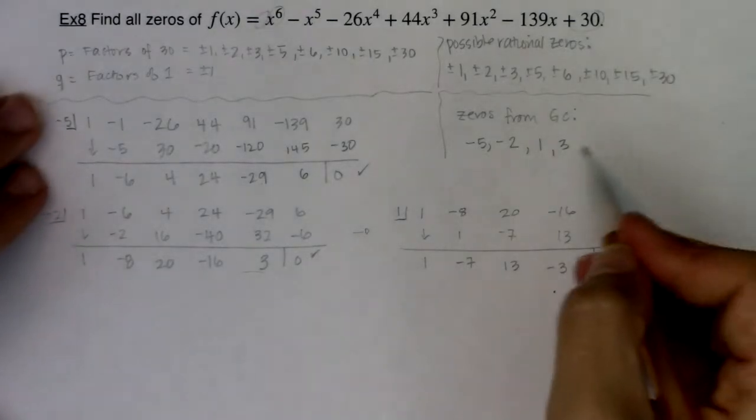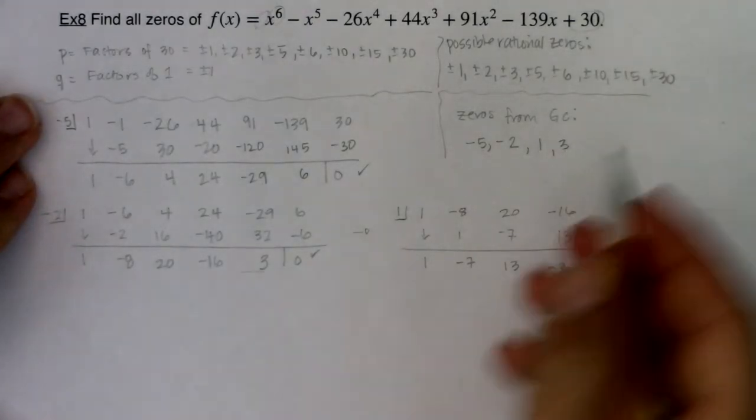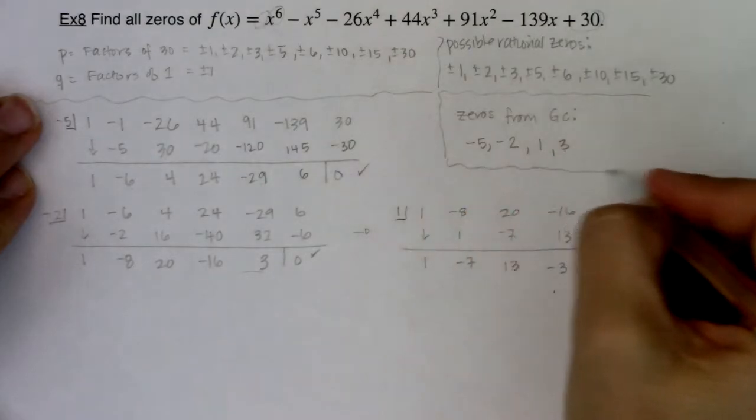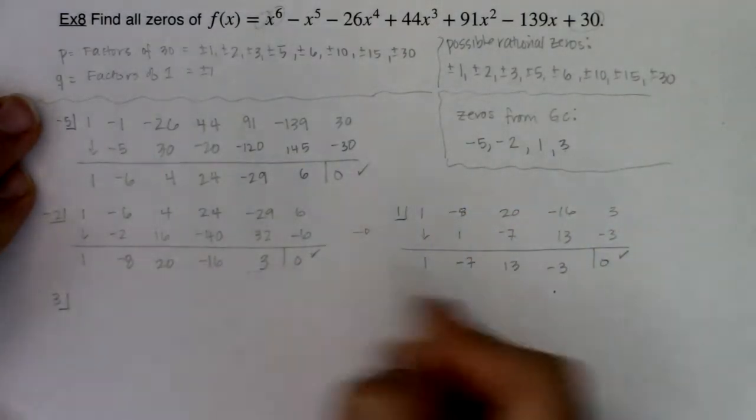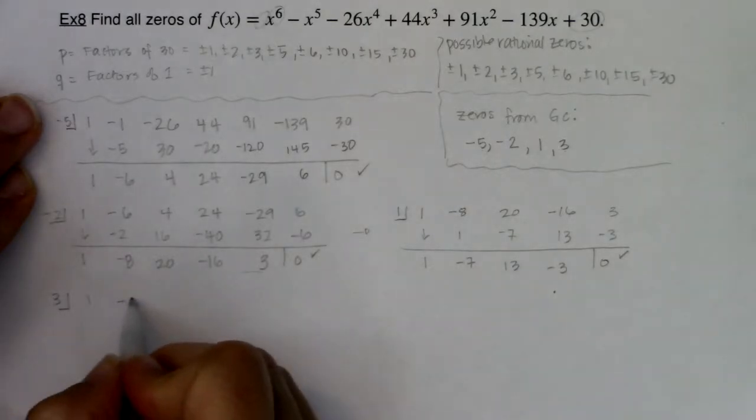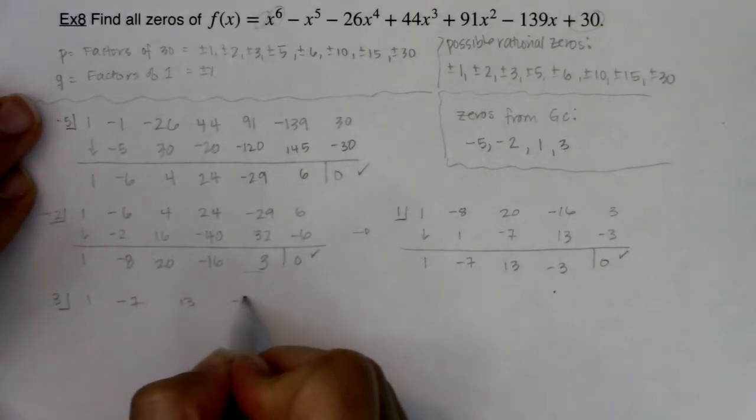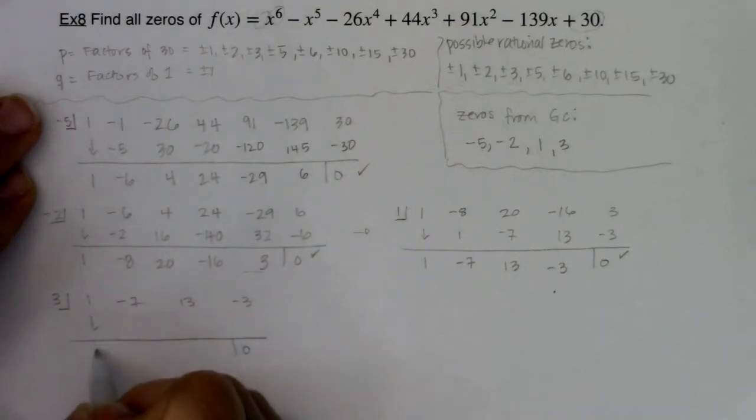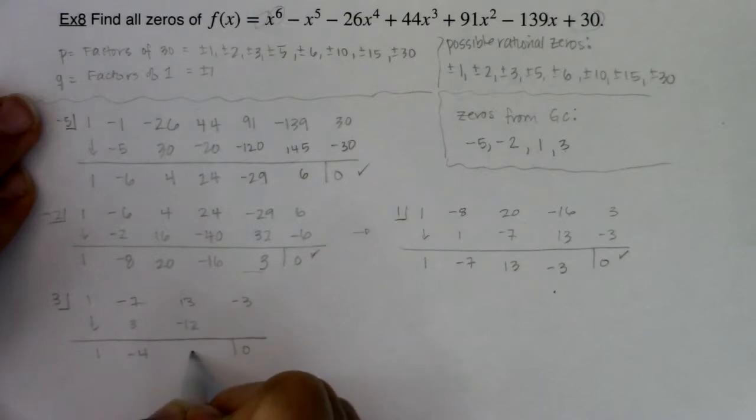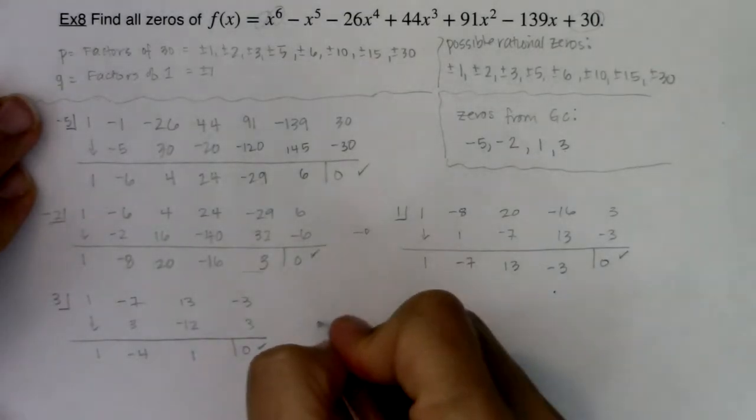Here's my last one. At least the last one I could find from my graphing calculator. So we'll put three here. And then I'm going to do 1, -7, 13, -3. And I better get zero. So we've got 1, 3, -4, -12, 1, 3, zero.